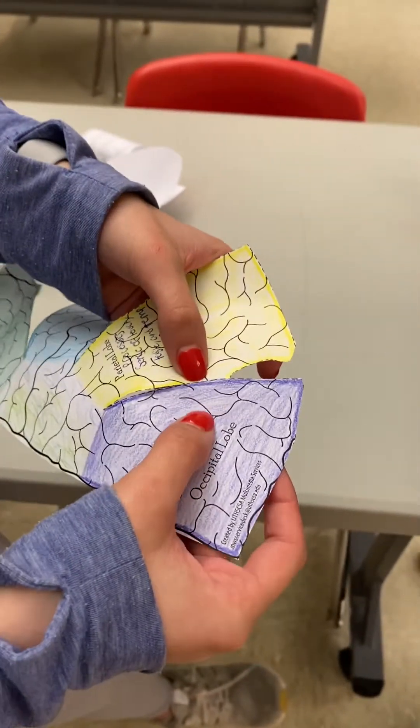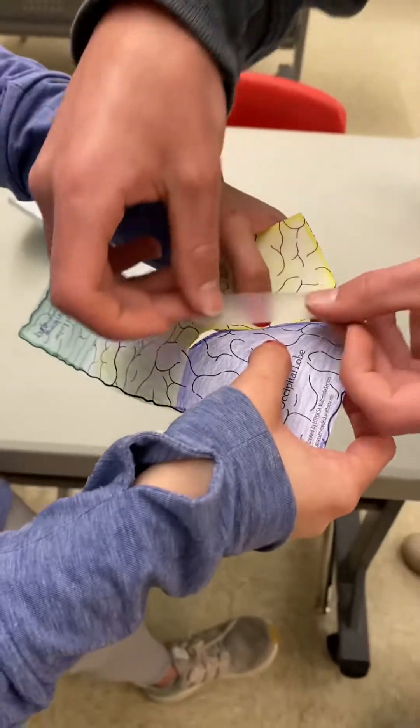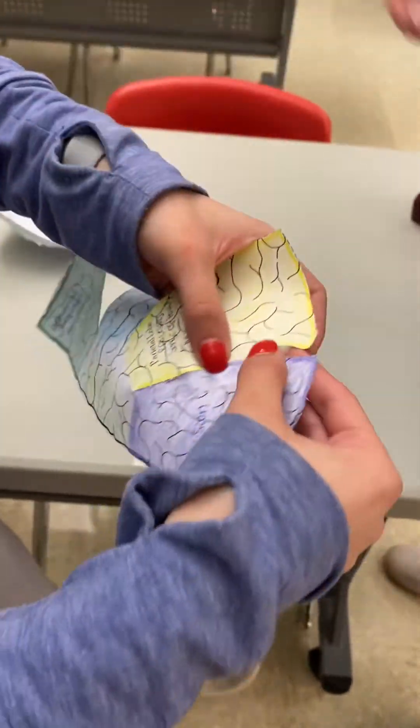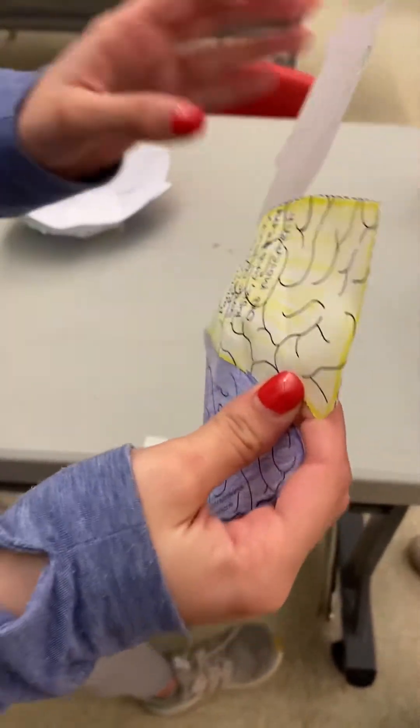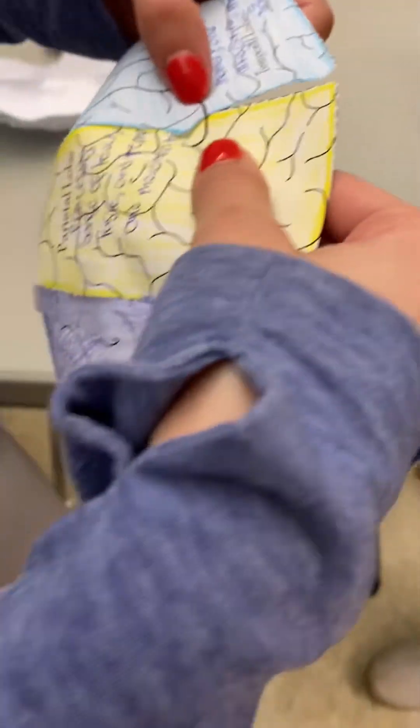Okay, so the first thing you're going to do is tape the sides together. You want to make sure they line up. If you don't, it's okay. You're going to tape these.